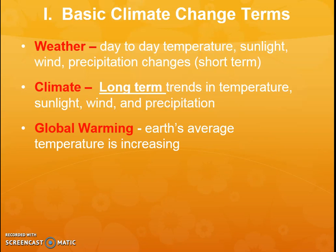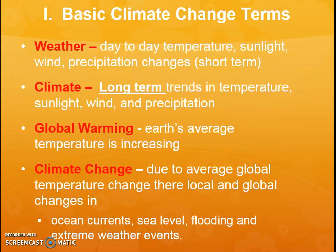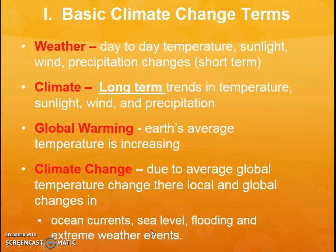Next, we're going to talk about global warming. Global warming refers to the fact that in climate change the earth's average temperature is increasing. Climate scientists track temperature through various means, and there is scientific consensus that the average temperature across the globe is increasing — and we're worried it will continue to rise. Climate change, however, is the broader concept: that increasing temperature influences ocean currents, sea level, flooding, extreme weather events, and much more. Global warming is just the temperature piece.